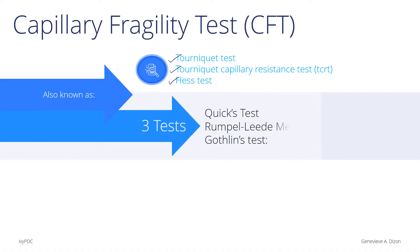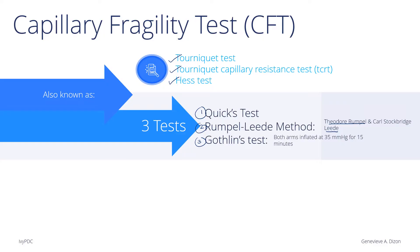There are three different methods for testing CFT. We have the Quick's test, the Rumpel-Leede method, and the Gothlin's test. The Rumpel-Leede method is named after Theodore Rumpel and Carl Stockbridge-Leede. The Gothlin's test is performed with both arms inflated at 35 mmHg for 15 minutes.